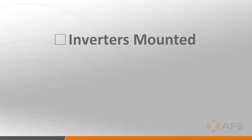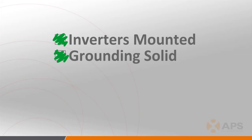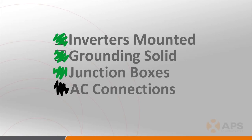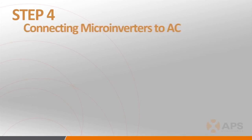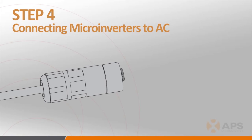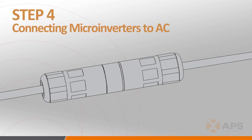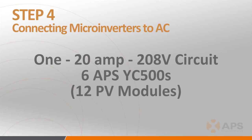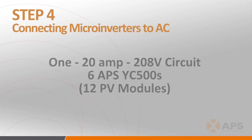With the inverters mounted on the racking system, the grounding sorted out, and junction boxes installed in the appropriate locations, it's time to connect the microinverters together on the AC side. Plug the AC female connector of the first inverter to the male connector of the next inverter, and so on, to form a continuous AC branch circuit. Remember the branch inverter limits: the maximum number of units per 120-240 volt, 20-amp circuit is 7, or a total of 14 PV modules, and the maximum number of units per a 208-volt, 20-amp circuit is 6, or a total of 12 PV modules. Do not string the AC cabling so tight that it places stress on the connection points.